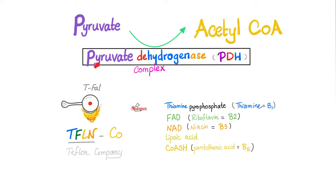This wonderful pyruvate dehydrogenase requires five coenzymes: thiamine pyrophosphate, which comes from vitamin B1; FAD, which comes from vitamin B2; NAD, which comes from niacin or vitamin B3; lipoic acid; and coenzyme A (CoASH), which comes from pantothenic acid or vitamin B5. I remember them as my Teflon company: T-F-L-N-Co.